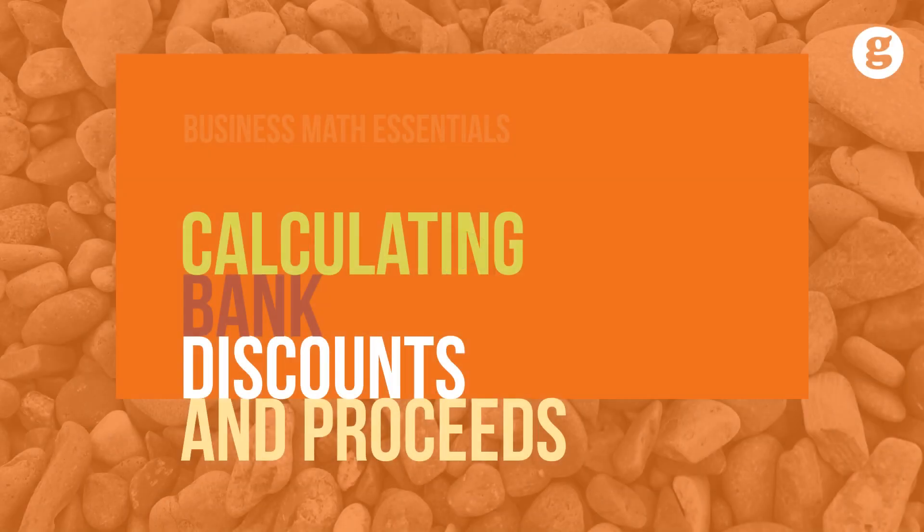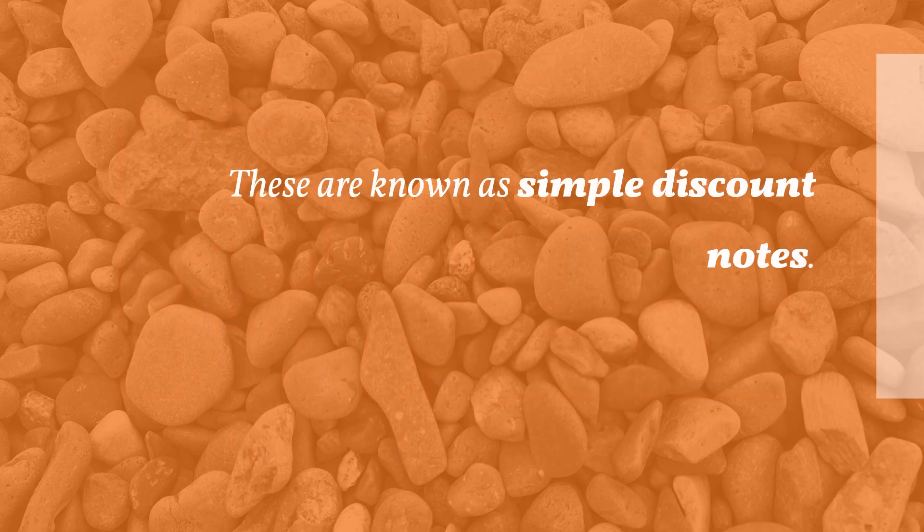Another way of lending money is to deduct the interest from the principal at the beginning of the loan and give the borrower the difference. Let's take a look at calculating bank discounts and proceeds. These are known as simple discount notes.